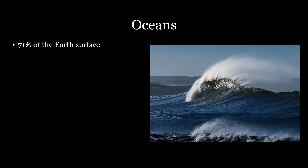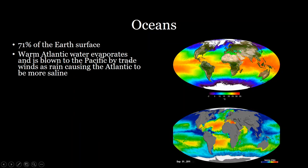First, we should talk about oceans. Oceans are the biggest component of the hydrologic cycle — they cover 71% of the Earth's surface. We can map ocean temperature as well as ocean salinity. This map shows ocean temperature with hotter water near the equator, where it receives more solar radiation, and colder water near the poles, as expected.